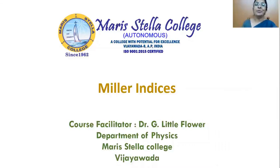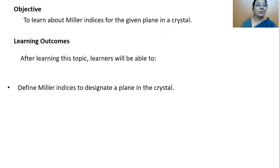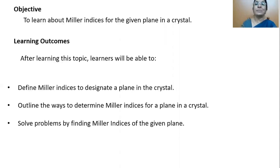Hello viewers, I welcome you all to another talk on Miller Indices. Miller Indices is a simple technique to specify a direction or a plane in a lattice or in a crystal. The objective of today's talk is to facilitate learners to know about Miller Indices for a given plane in a crystal. Learning outcomes will be that learners will be able to define Miller Indices to designate a plane in the crystal, outline the ways to determine Miller Indices, and solve problems by finding Miller Indices of a given plane.